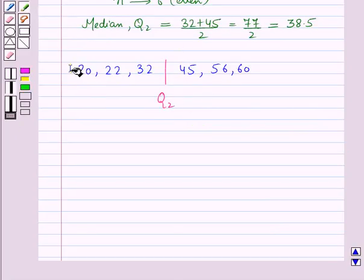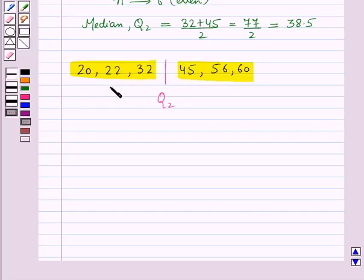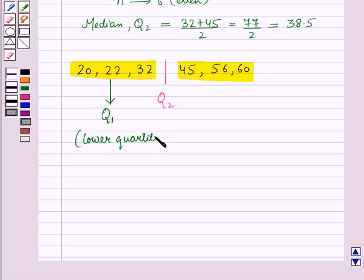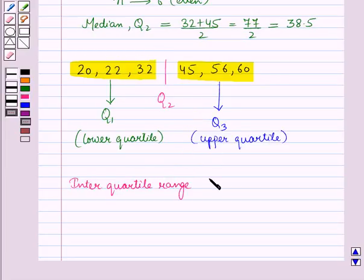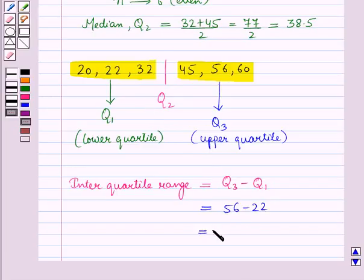The median of the lower half is the lower quartile and the median of the upper half is the upper quartile. In the lower half we have 3 terms, so the median is the middle term which is 22. Therefore 22 is the lower quartile Q1. Similarly 56 is the upper quartile Q3. The inter-quartile range is equal to Q3 minus Q1, which is 56 minus 22, which is equal to 34.